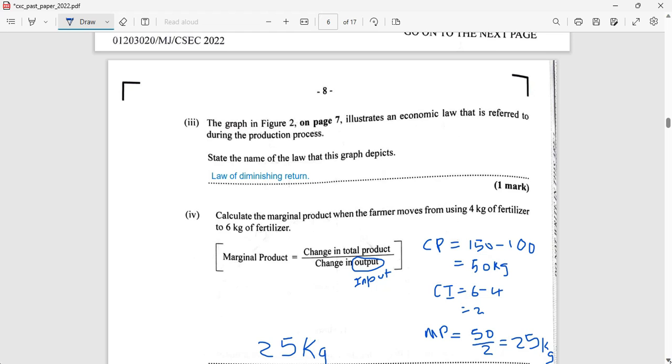Calculate the marginal product when the farmer moves from using 4 kg of fertilizer to 6 kg of fertilizer. Now the first thing I observed here, and I want you to tell me in the comment, I don't know if I have had it wrong but I am open to suggestion and correction. I think that this formula is incorrect. The output at the bottom should have been input. The input here would have been 4 kg and 6 kg, so the formula should read: marginal product equals change in the total product divided by the change in the input.